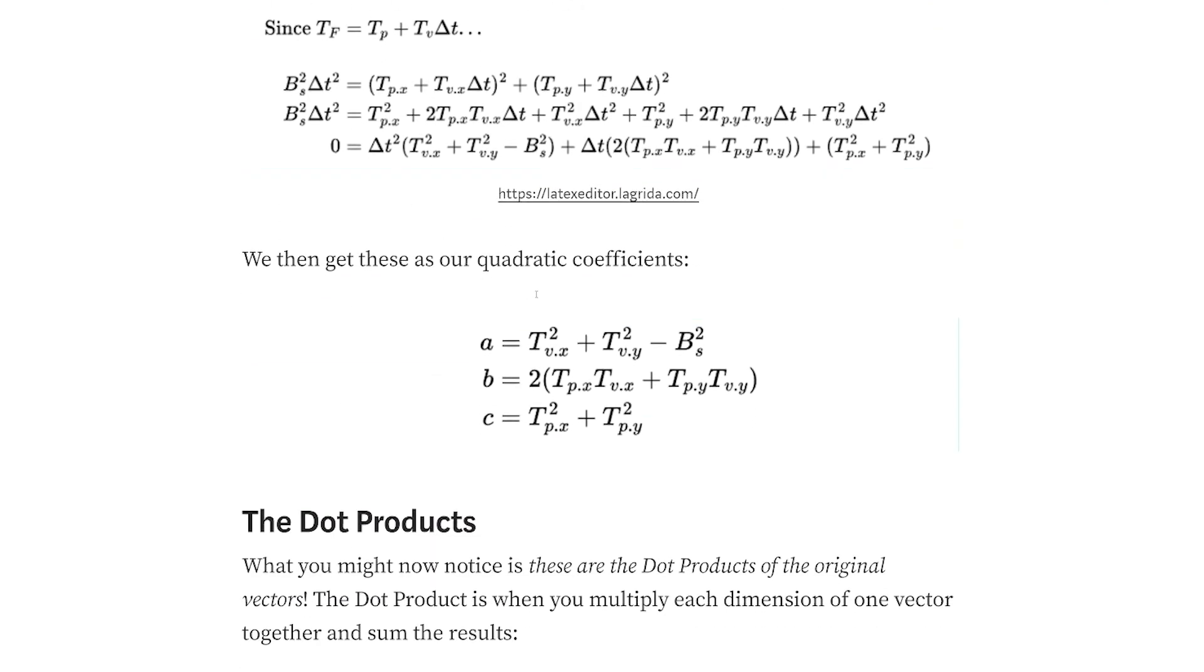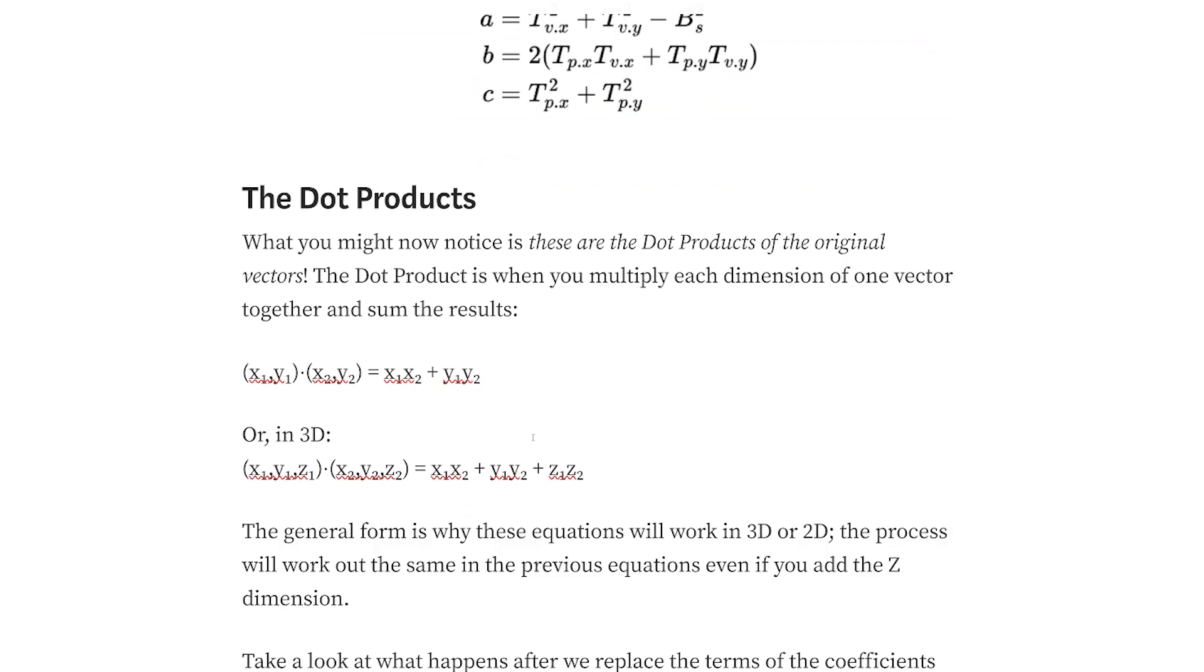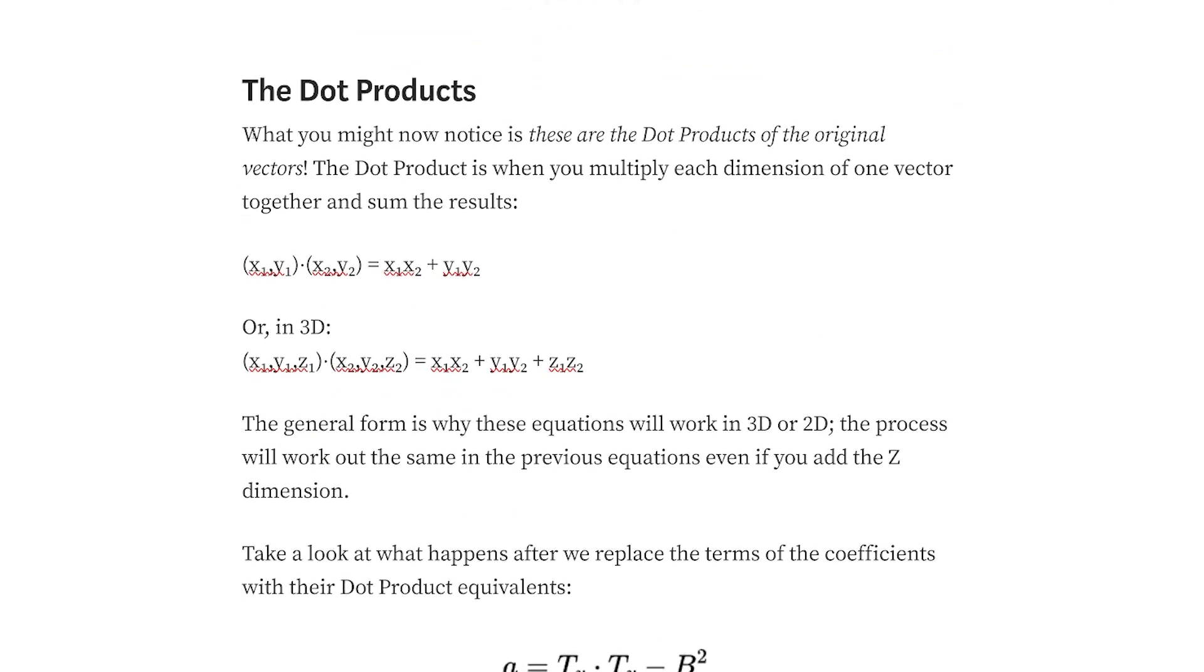You get these as the quadratic coefficients. They look a little complicated, but they get a lot simpler once you turn them into the dot products. So what you might not notice is that these are the dot products of the original vectors that we had at the beginning.